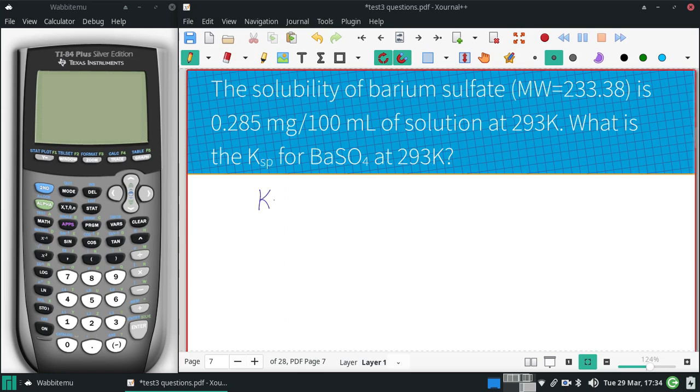Alright, so our basic equation for the Ksp, this one being very simple because barium is a 2 plus and sulfate is a 2 minus, so there's actually one of each of those.